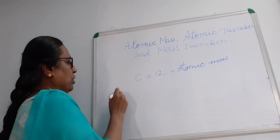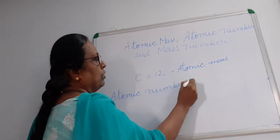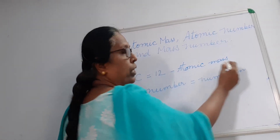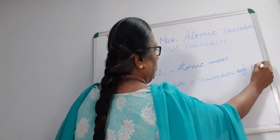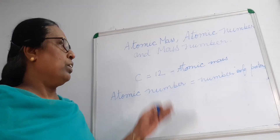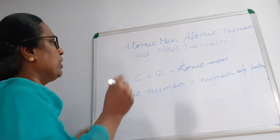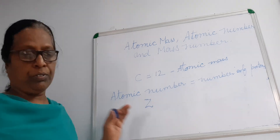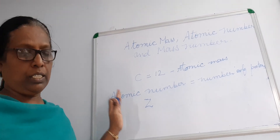Atomic number is the number of protons present in the nucleus of an atom. Atomic number is equal to the number of protons present in the nucleus. This atomic number is represented with the capital letter Z.